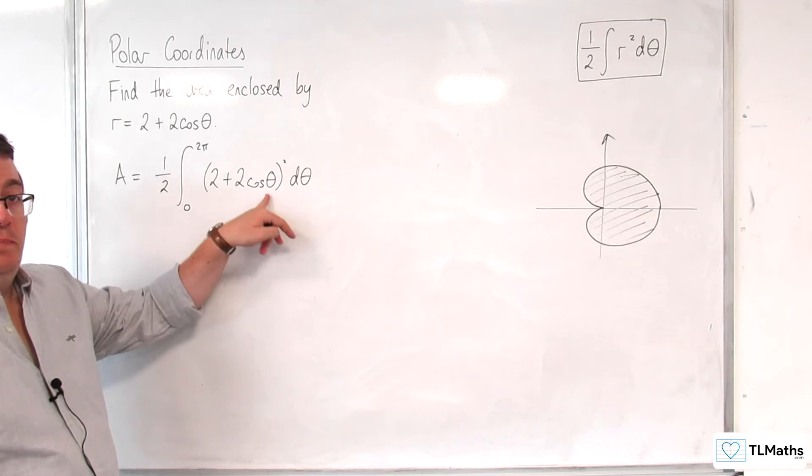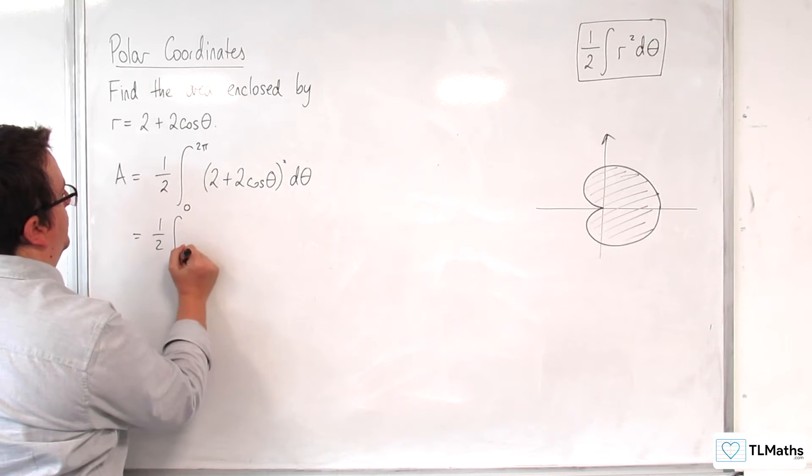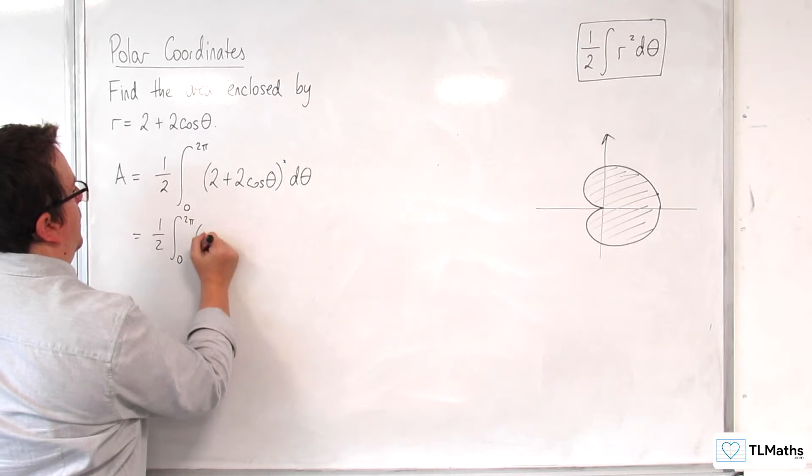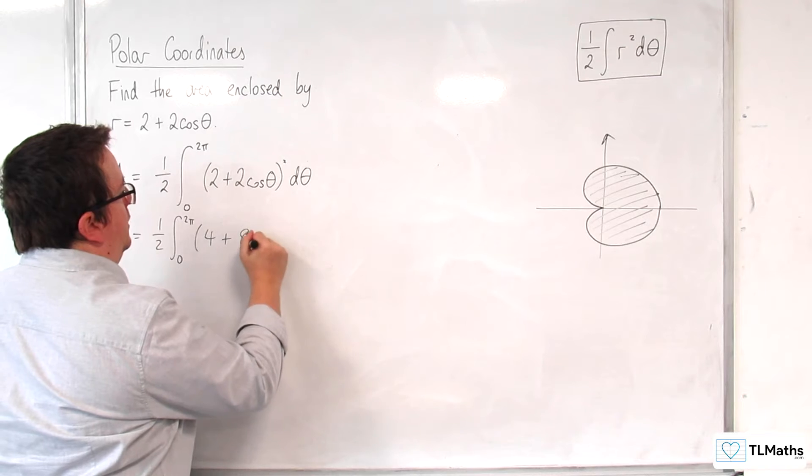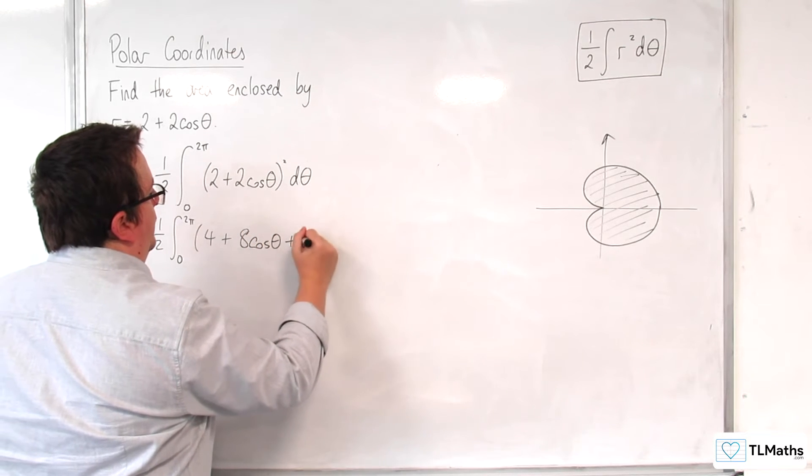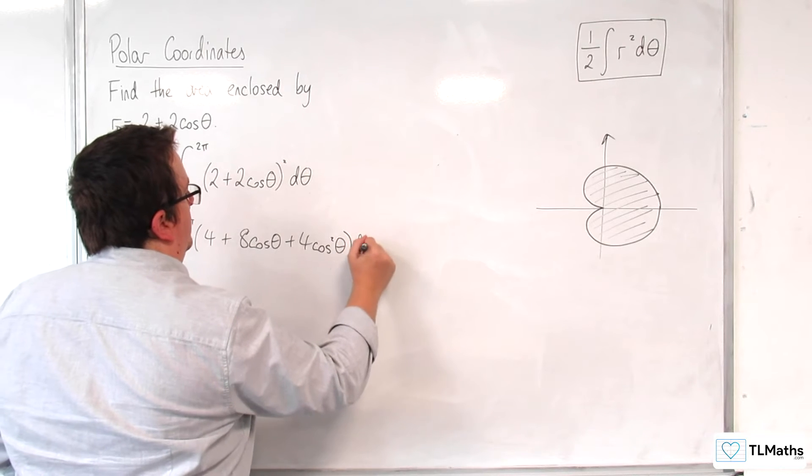So what I'm going to need to do is to expand this out. So we've got 1 half times the integral between 0 and 2 pi of 4 plus 8 cosine theta plus 4 cosine squared theta d theta.